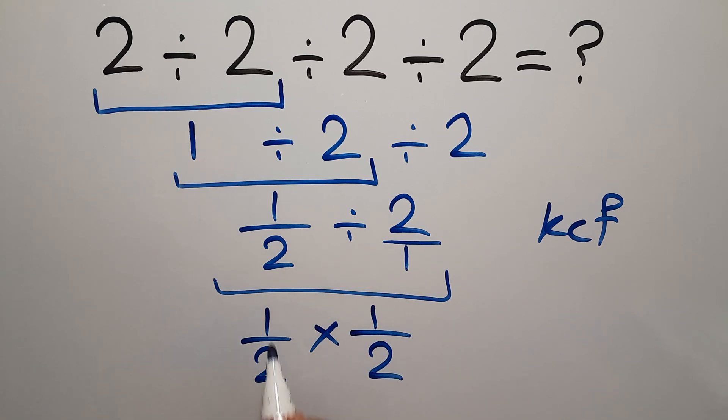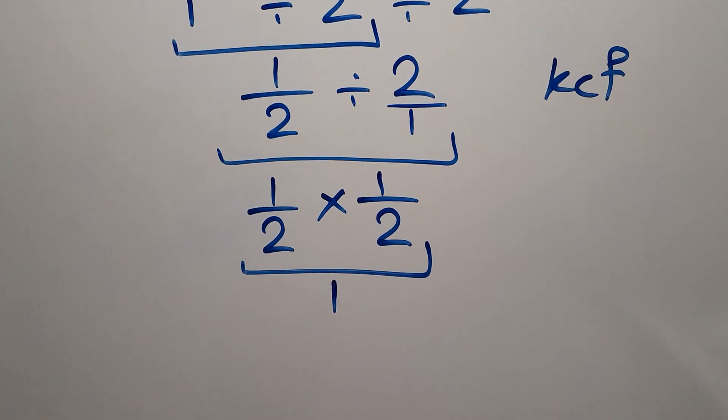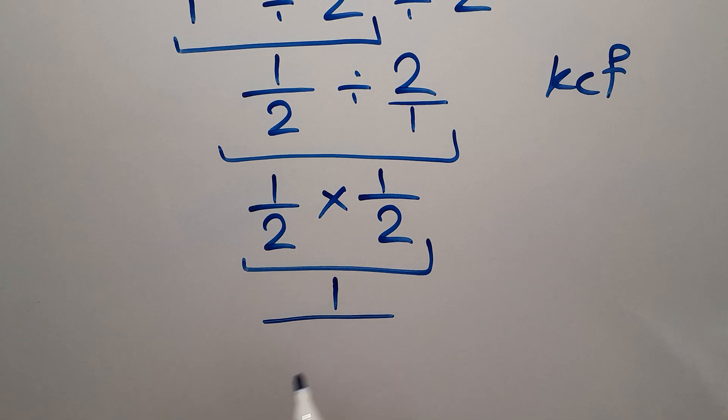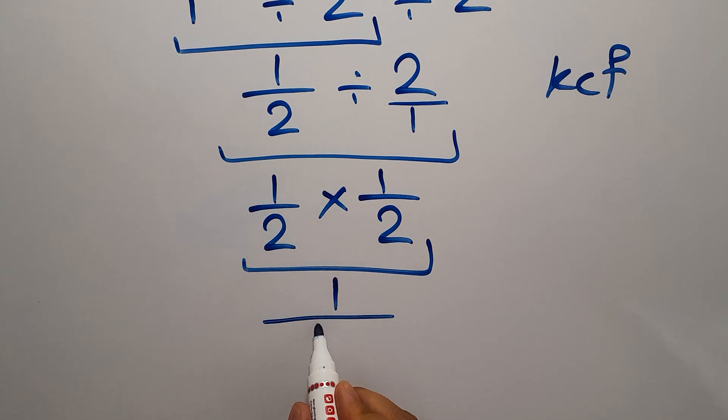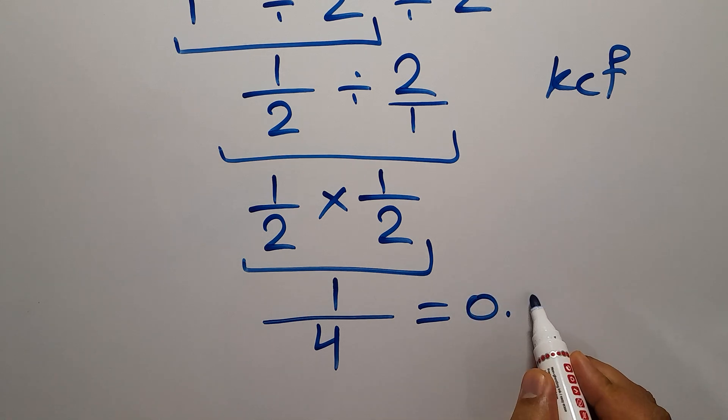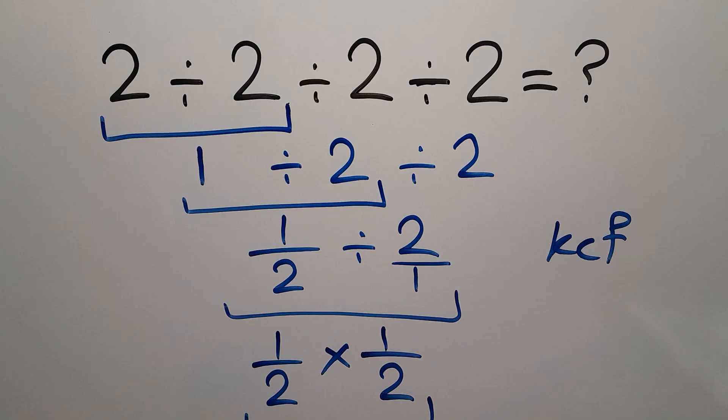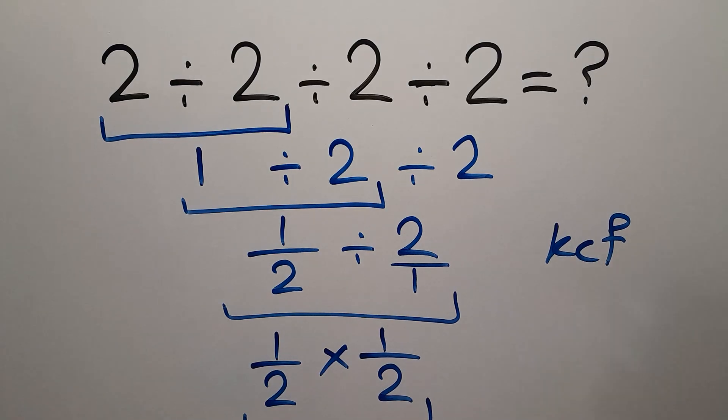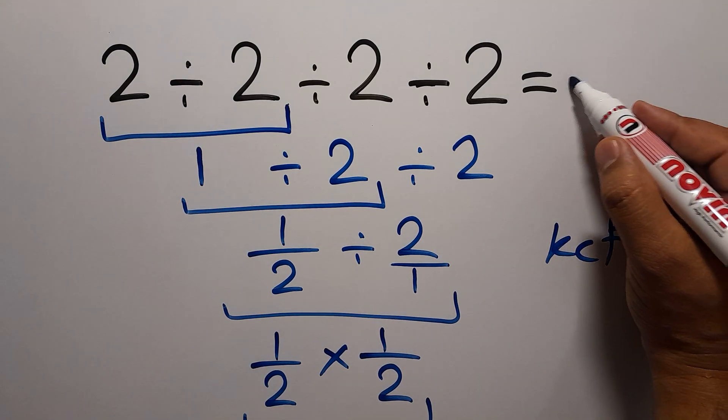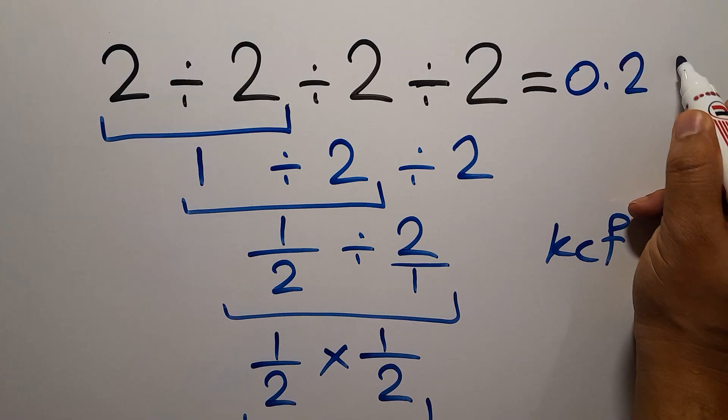1 times 1 gives us 1, so 1 over 2 times 2 which equals 4, and this is equal to 0.25. Our final answer to this problem is 0.25. The correct answer is 0.25.